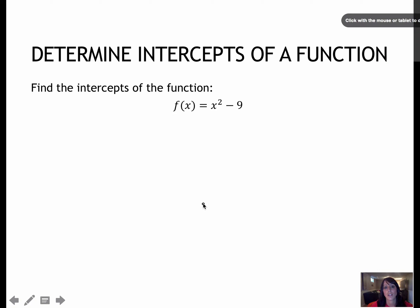So here is a function. One time I'm going to let f of x equals 0, and the other time I'm going to let x equals 0. So one time I'm going to say f of 0, which of course is just like saying y. 0 squared is 0 minus 9 is negative 9, and that would be my y-intercept, 0 comma negative 9.